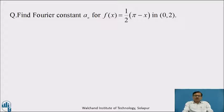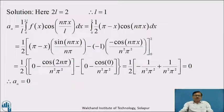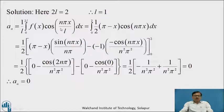I hope you have completed. Now, comparing with 0 to 2L, here 2L = 2, therefore L = 1. We can calculate aₙ = (1/L) ∫₀²ᴸ f(x) cos(nπx/L) dx, which equals, with L = 1, the integral from 0 to 2 of ½(π − x) cos(nπx) dx.